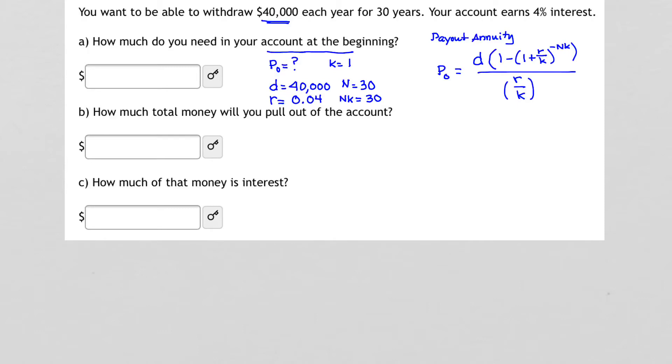So taking this bit of information and these variables and substituting them into our payout annuity, we can come up with P sub 0. Now, I like to use Desmos, so I'm going to go ahead and plug all of that information into Desmos. So substituting all those variables and that expression into the free online calculator www.desmos.com, I get the following.